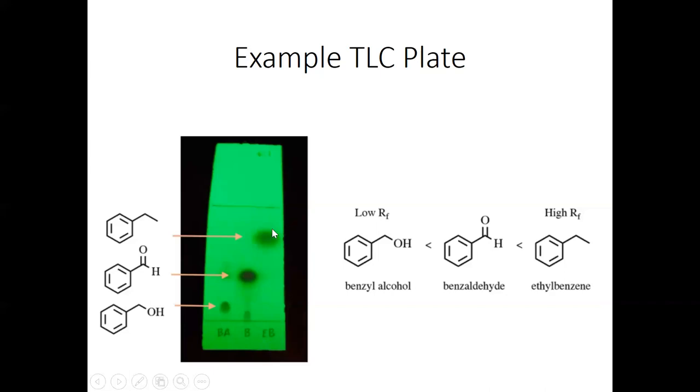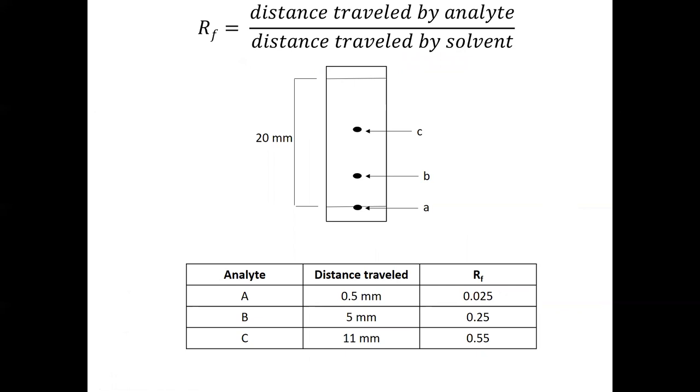But anyway, we could be a little bit more scientific about how far these compounds travel up the TLC plate. And the way we do that is with RF values. And RF values are really just a percentage without multiplying by 100%. It's how far up the TLC plate did the compound travel. There's a formula for it. It's just the distance traveled by the compound or analyte divided by the distance traveled by the solvent. So first to figure out the distance traveled by the solvent, you would take a ruler and using the millimeter side, you would start at the baseline and measure the distance between the baseline and how far the solvent traveled before you removed it from the TLC plate. So this is 20 millimeters. And then you would go back to the baseline and measure the distance from the baseline to the center of each of these spots. So that would be the distance traveled by each analyte.